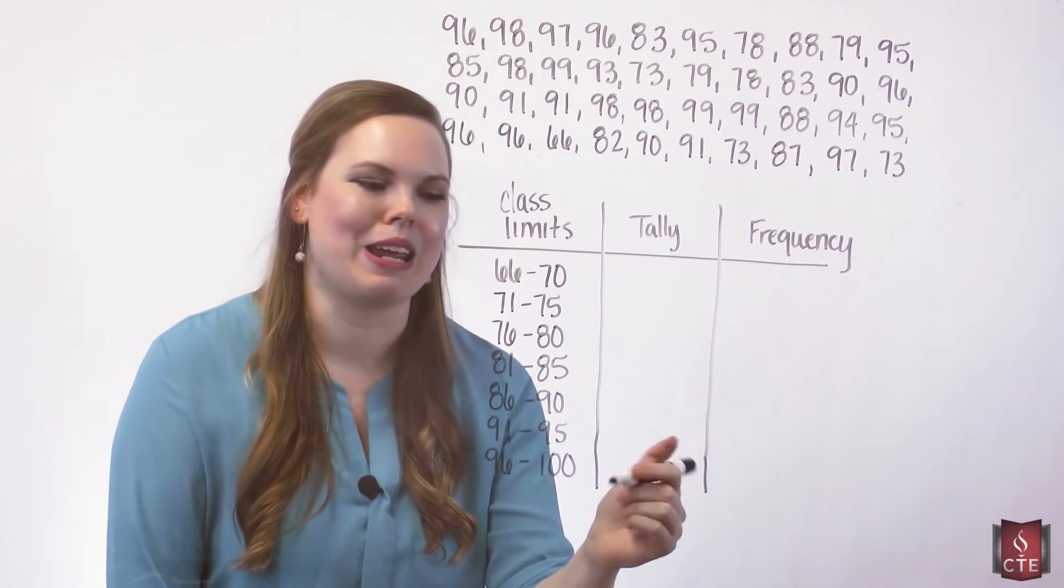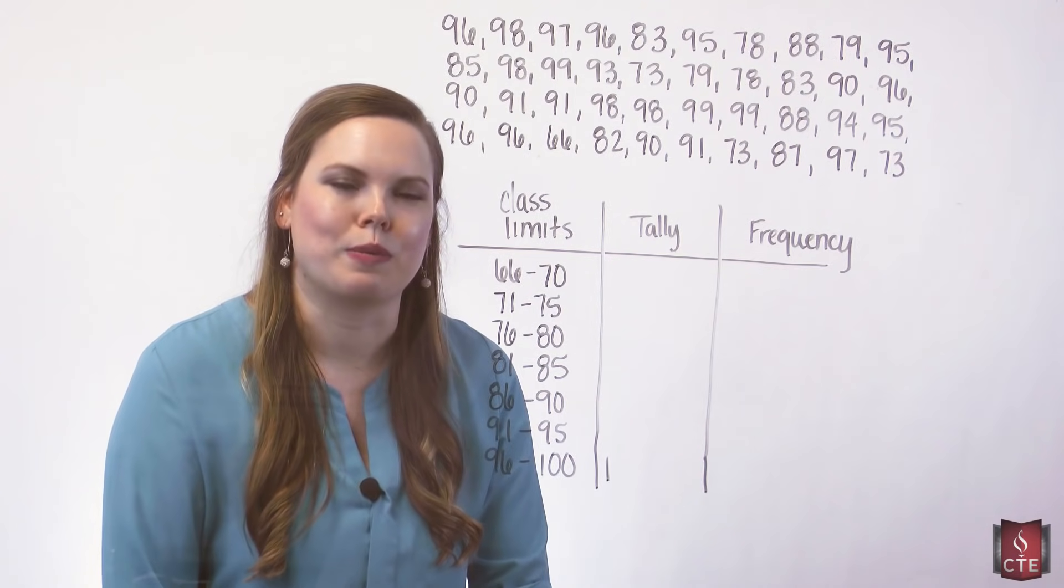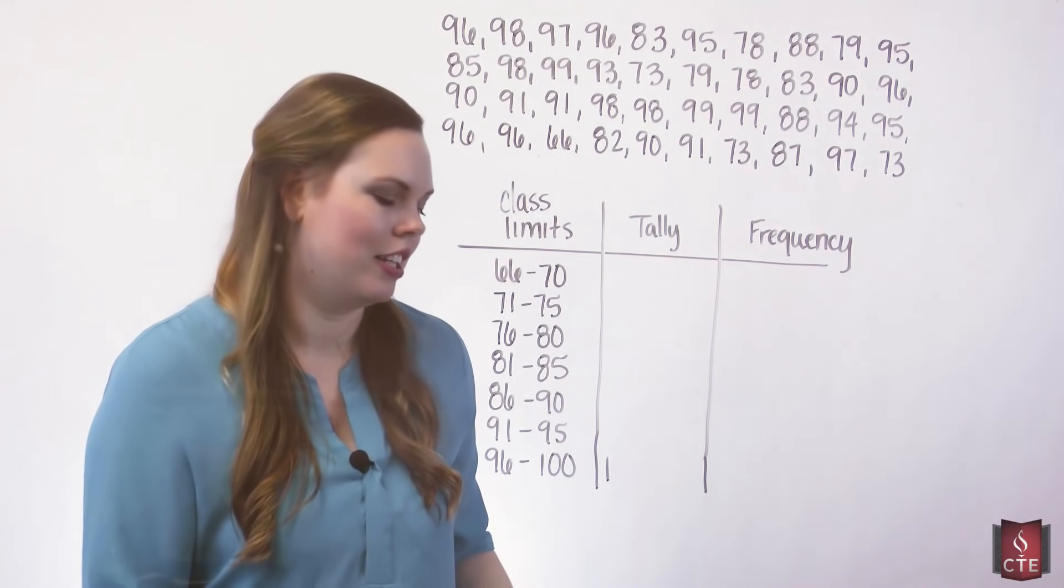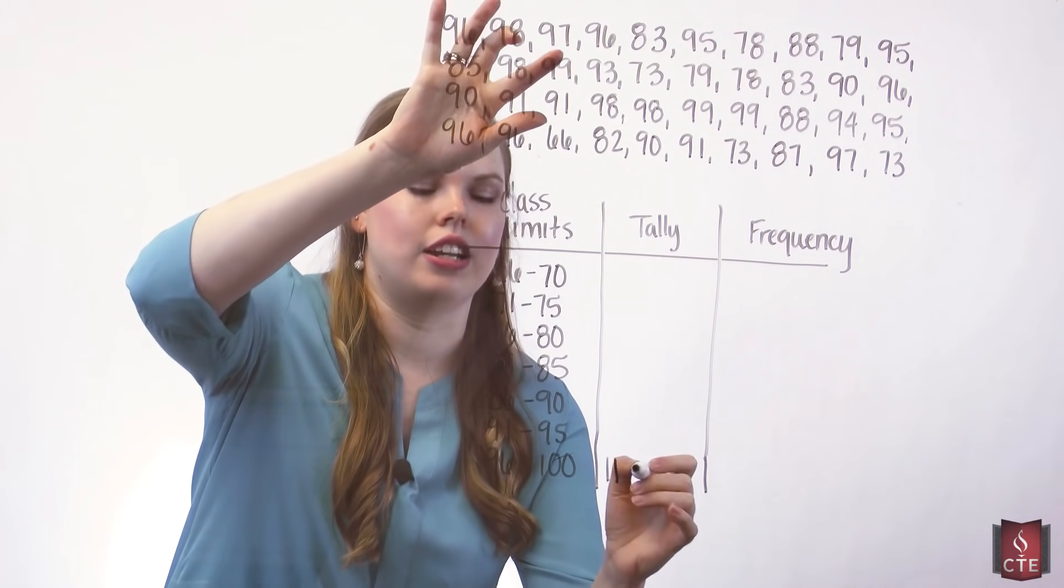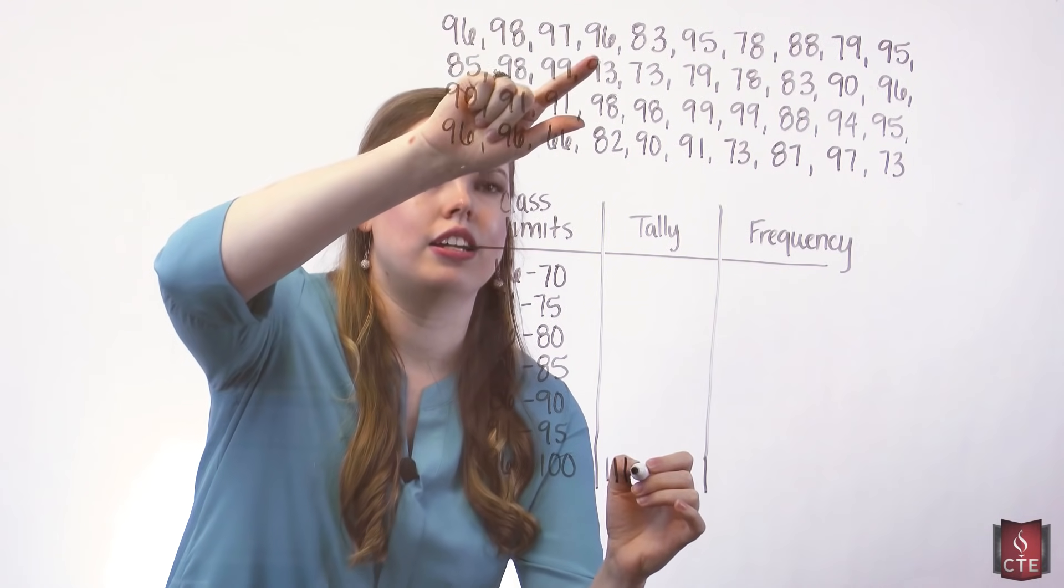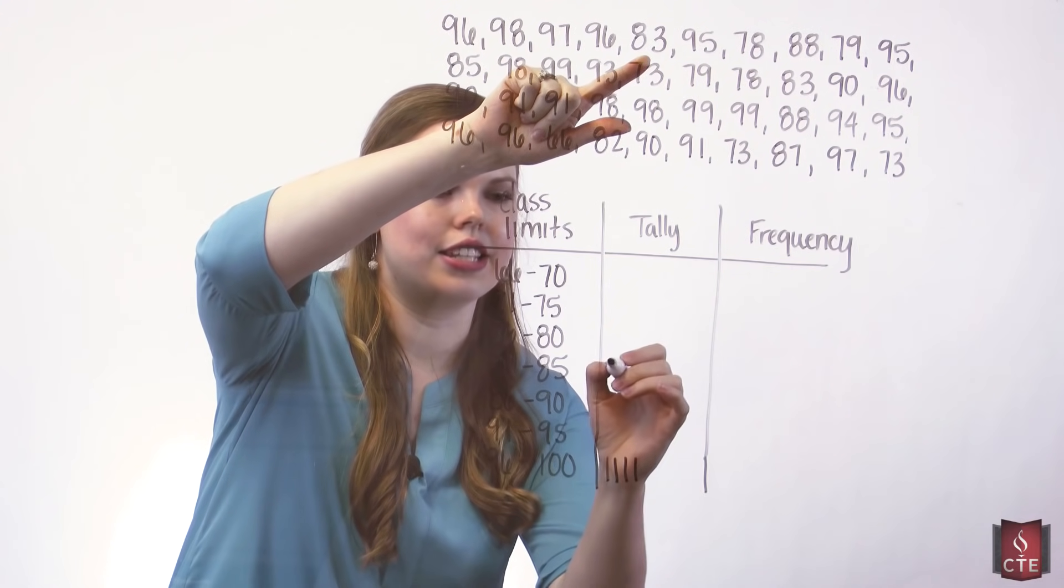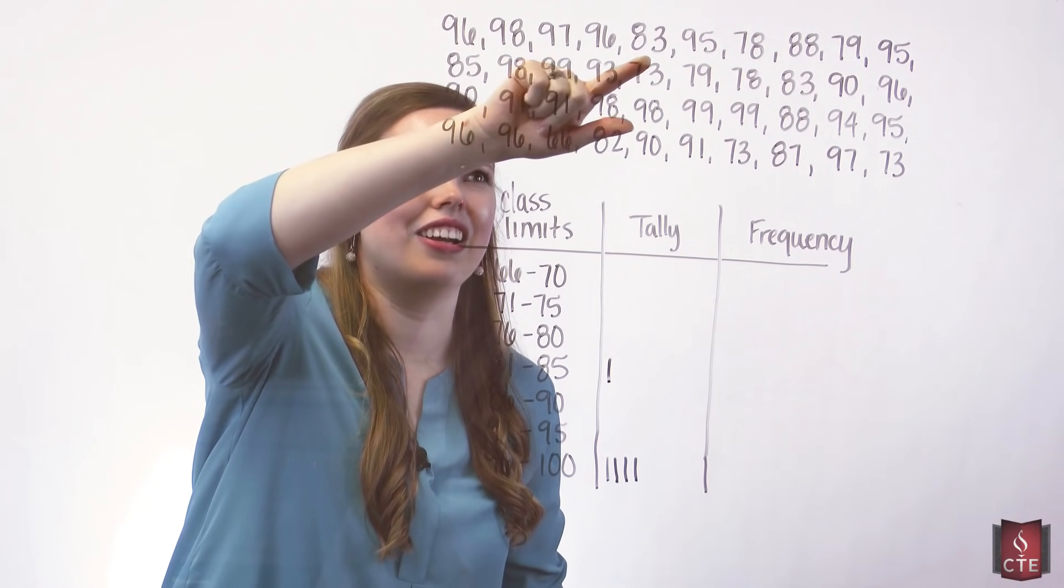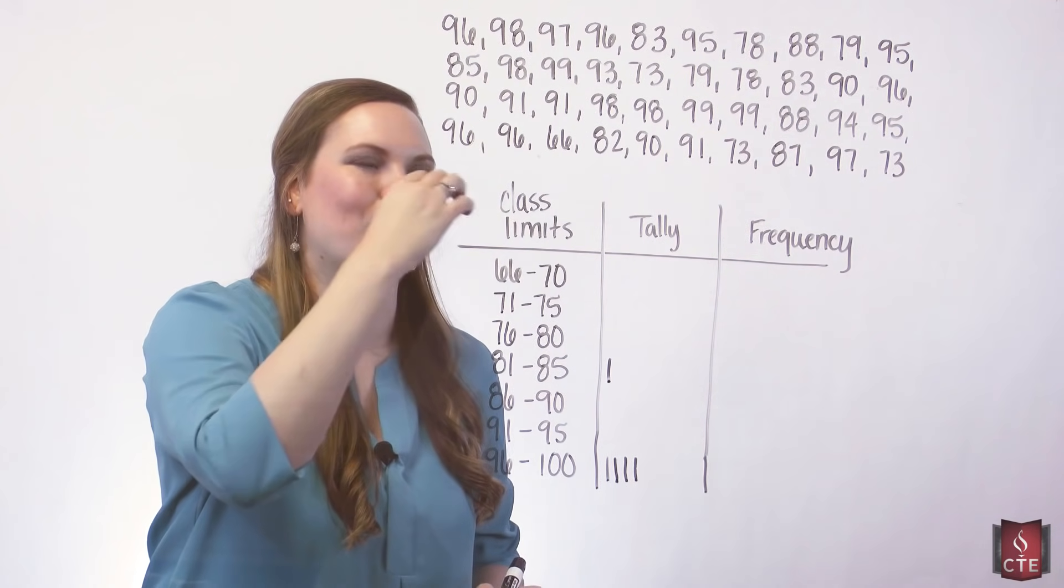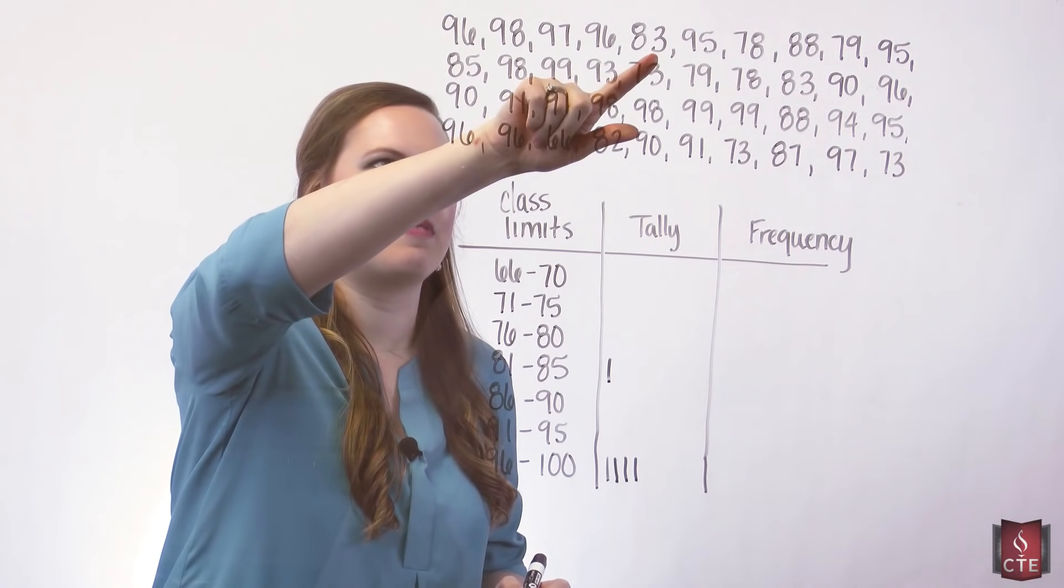96, of course, is going to be right here. I'm just going to put a tally because that's where it is. Then we'll move on to 98, and it goes here. 97, 96, 83 is going to be our first one in a different class. It's going to be right here. We'll just keep doing this for every data value and putting a tally where it lands.